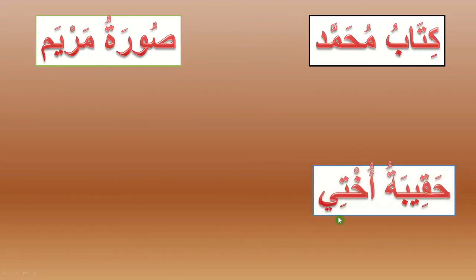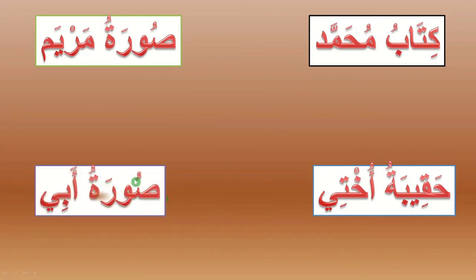Third example: حقيبة أختي — my sister's bag. حقيبة is the possessed in the beginning and أختي is the possessor after that. The last example: سورة أبي — my father's picture. We put سورة, the possessed, in the beginning and أبي, the possessor, after that.